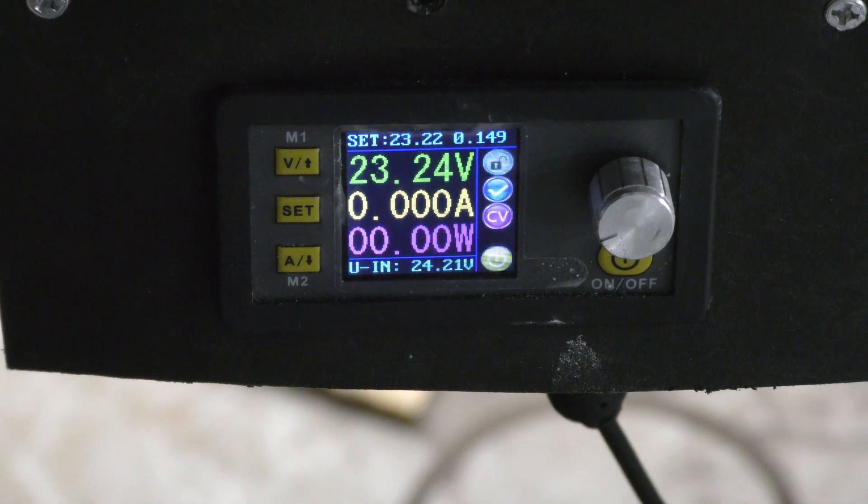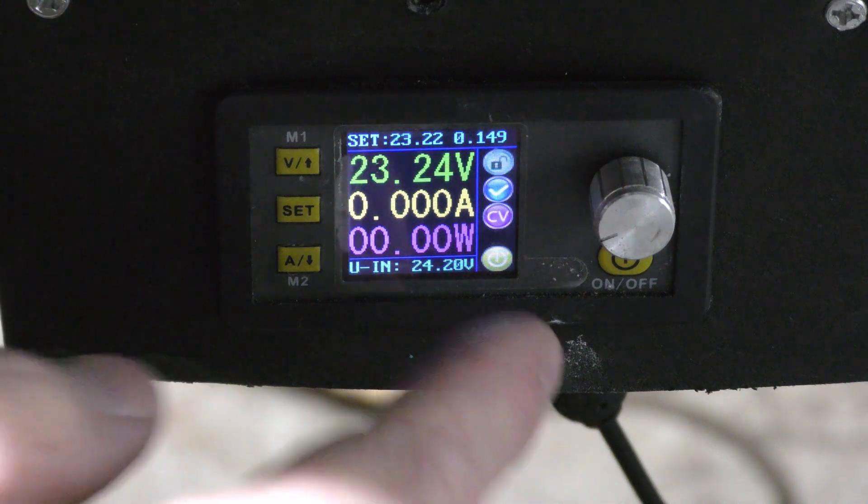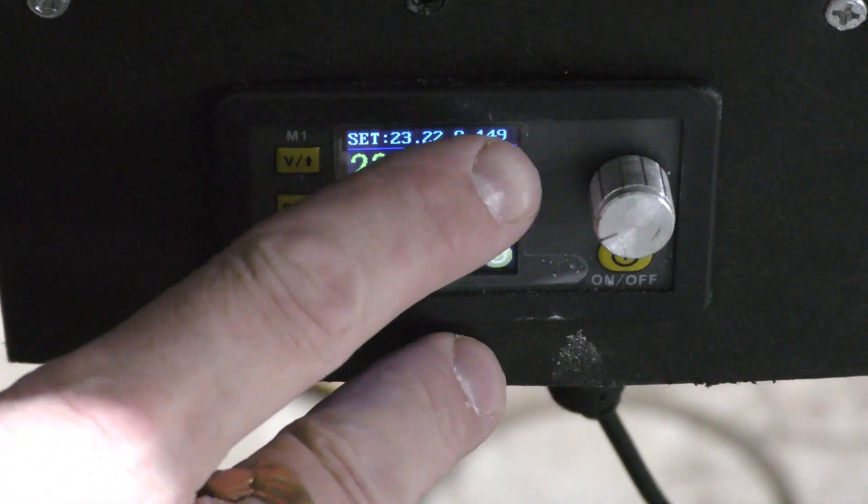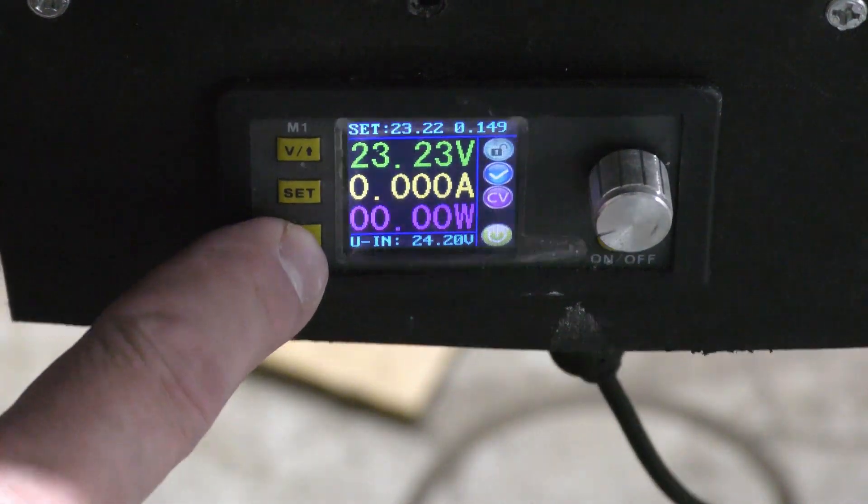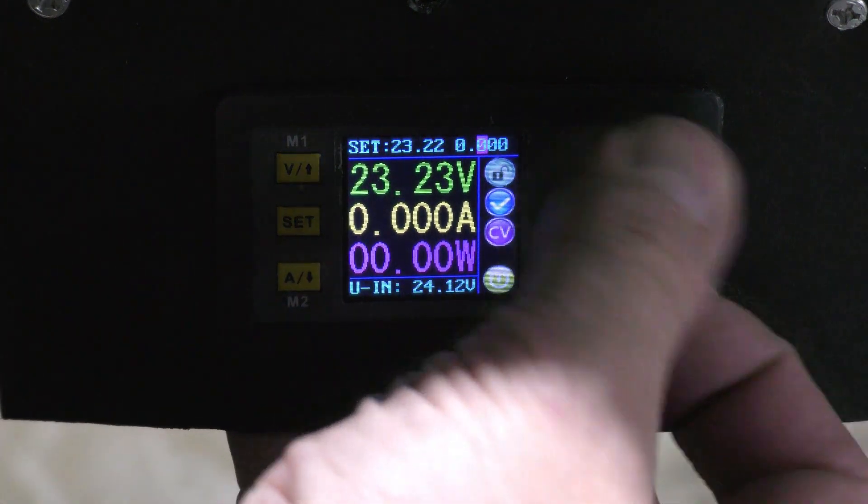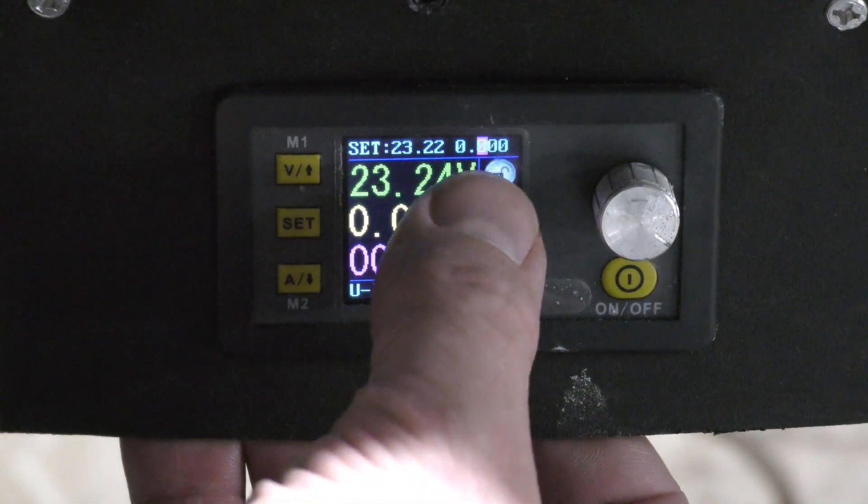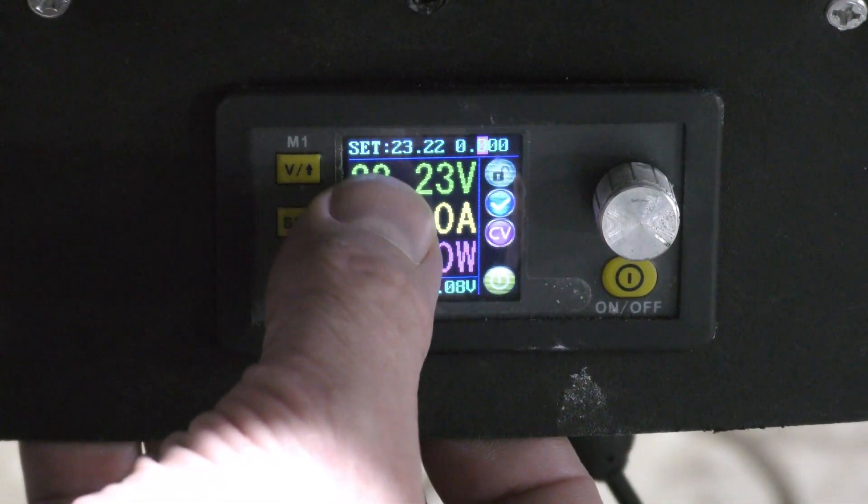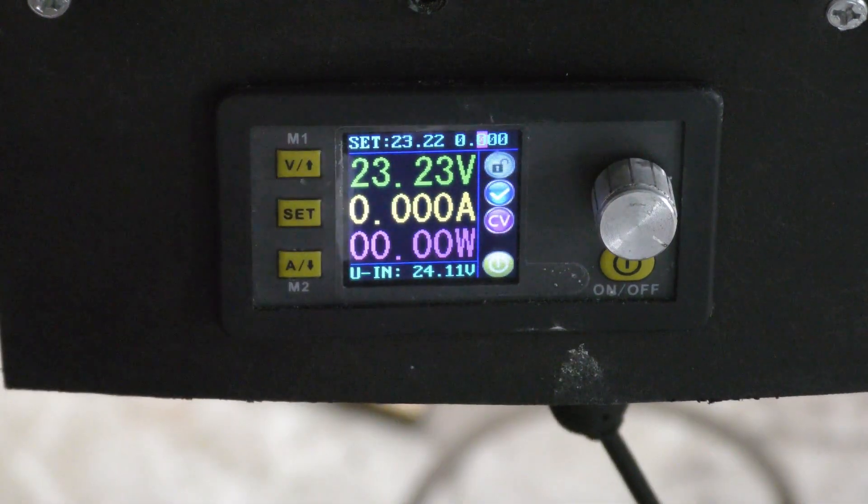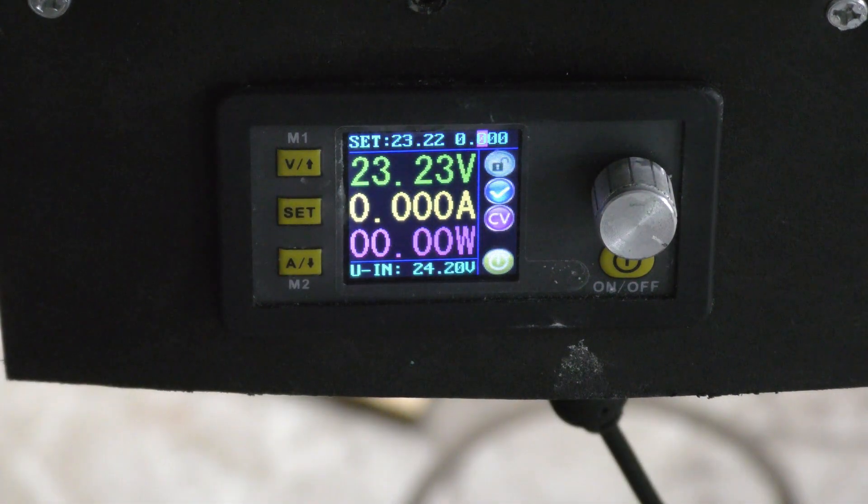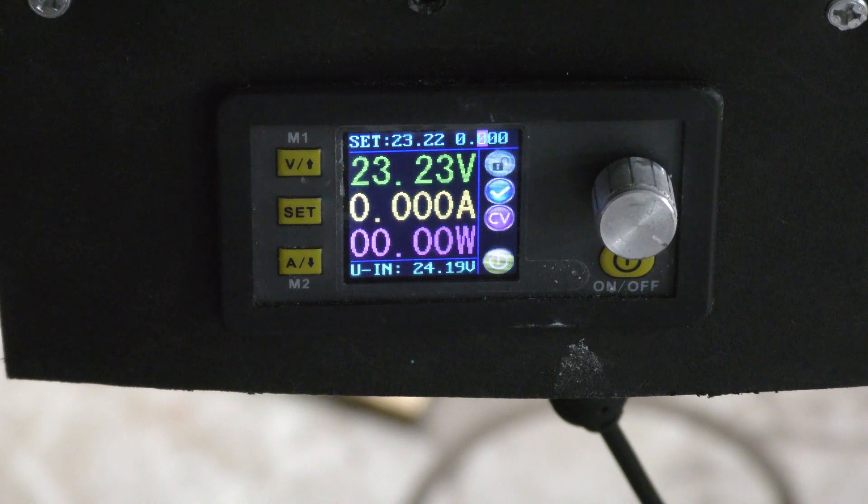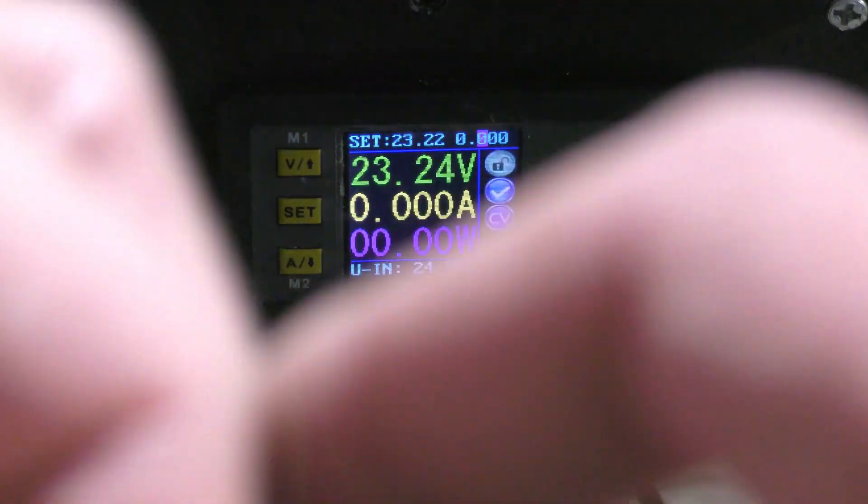Alright, so no matter what power supply you have, what you have to do is zero out the amps. So in this case, these are my amps up in the top of the right hand side. It says 0.149. So all I'm going to do is go to amps and I'm going to go and zero that out. So it says 0000. Notice my volts are cranked all the way up at 23 volts. But zero amps. So that's how I run. High voltage, no amperage at first.